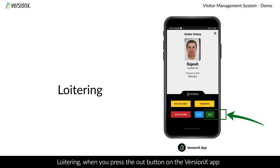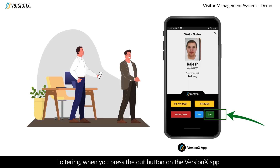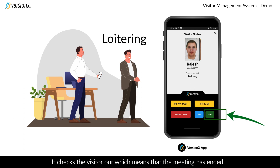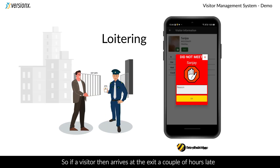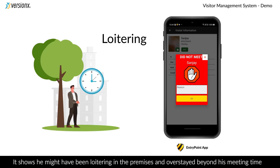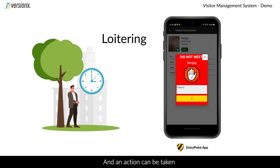Loitering. When you press the out button on the versionX app it checks the visitor out, which means that the meeting has ended. So if a visitor then arrives at the exit a couple of hours late, it shows he might have been loitering in the premises and overstayed beyond his meeting time, and an action can be taken.